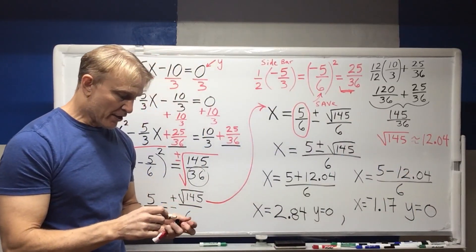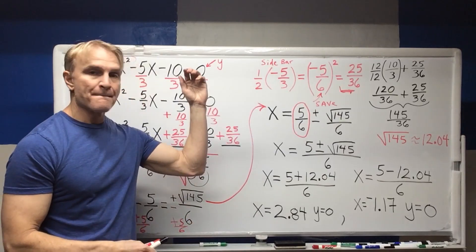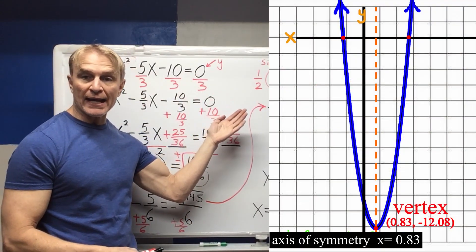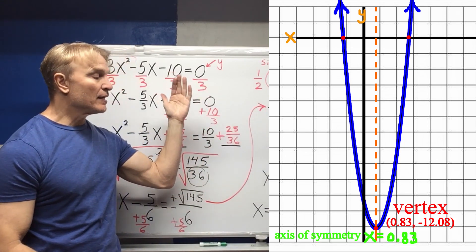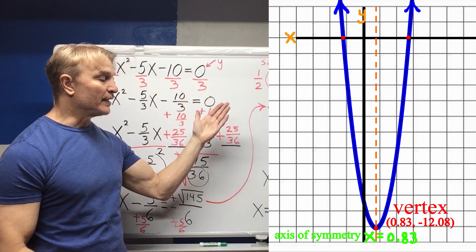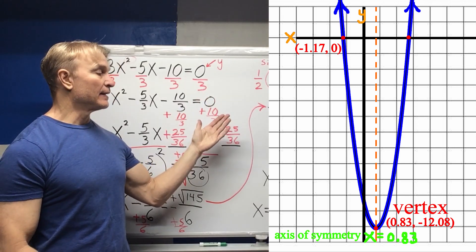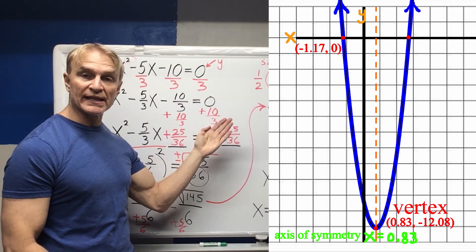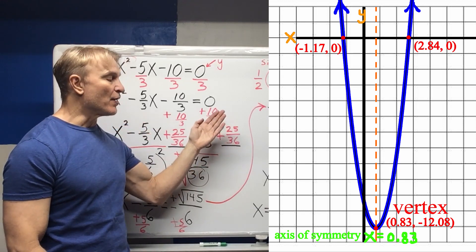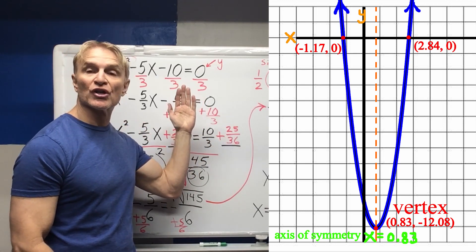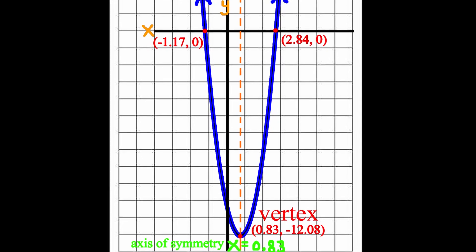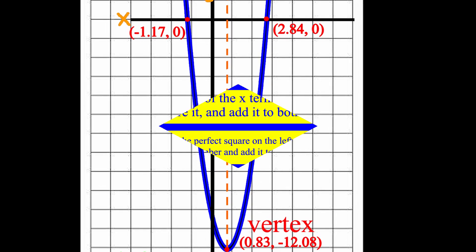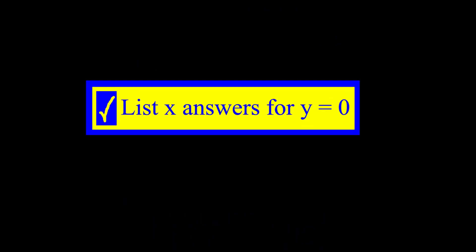And when we look at it on a graph, we see right here our axis of symmetry. And then you see where the parabola is crossing at x equals negative 1.17 approximately. And also where x approximately equals 2.84. That squashes that problem.